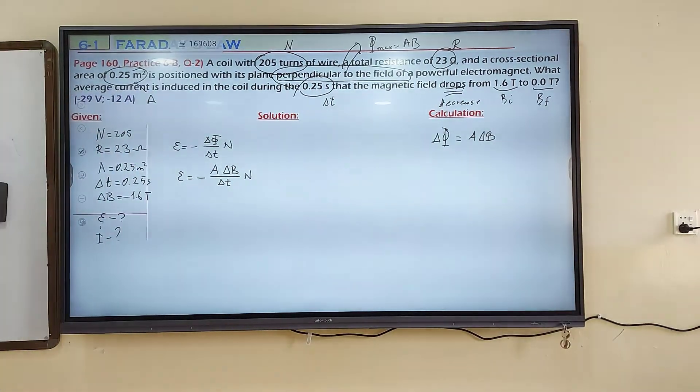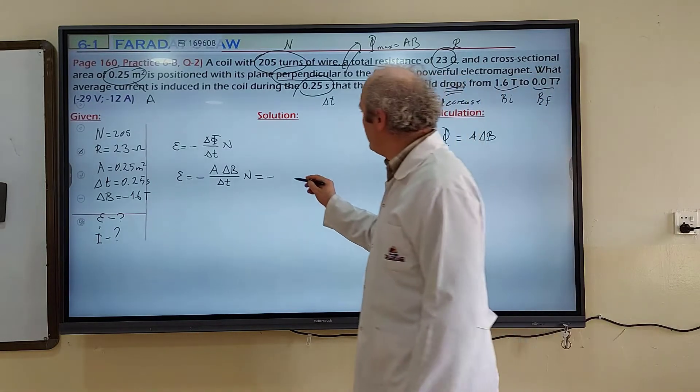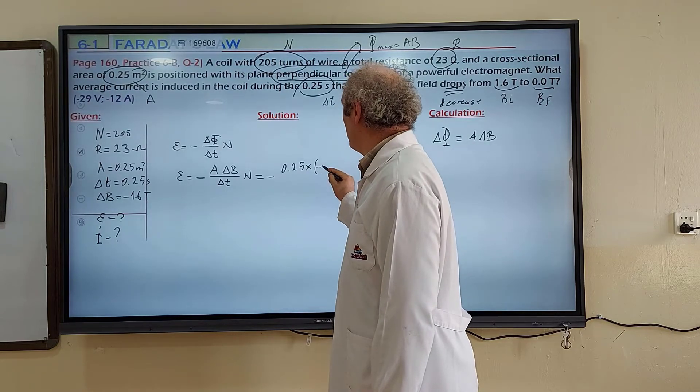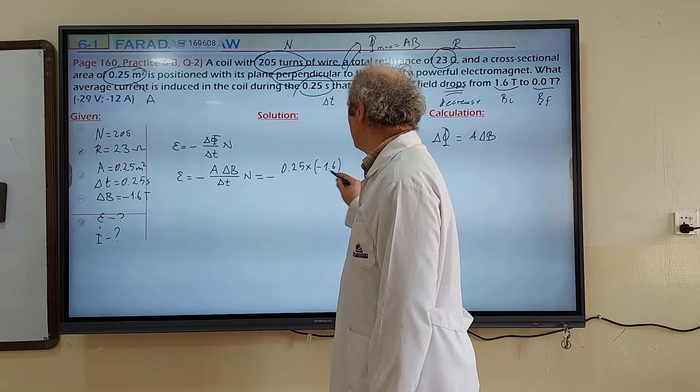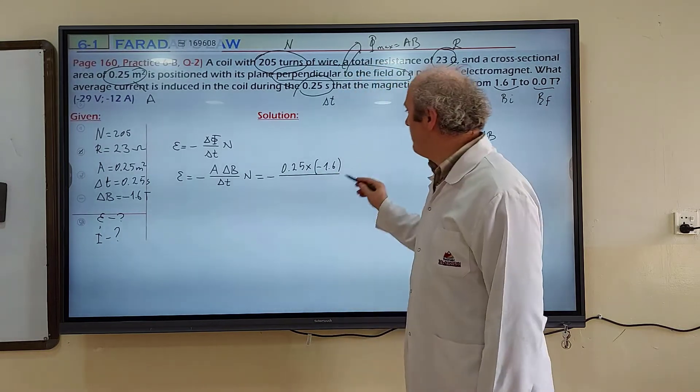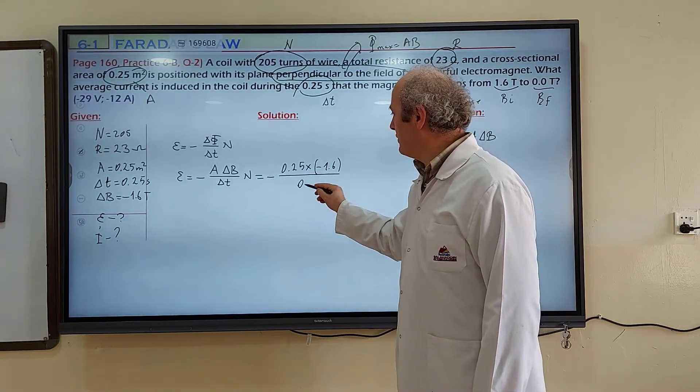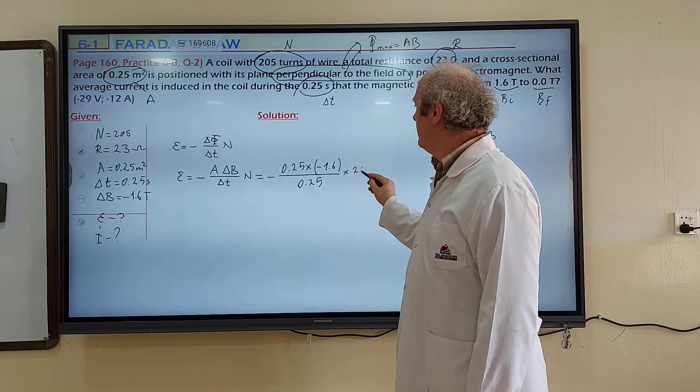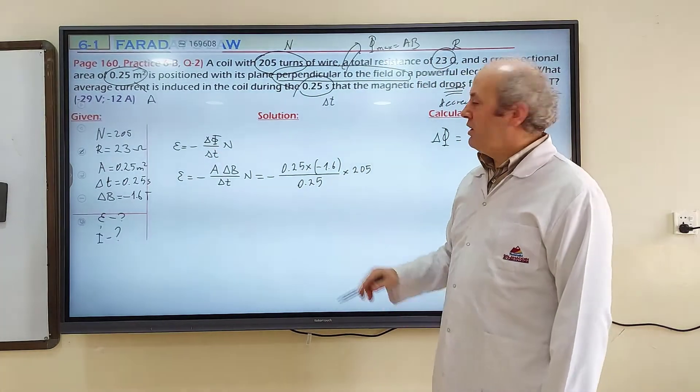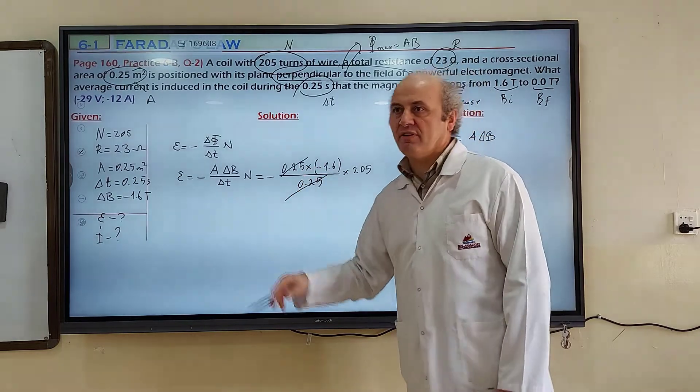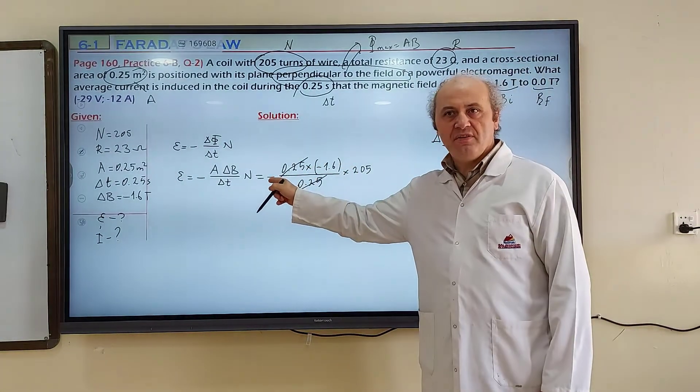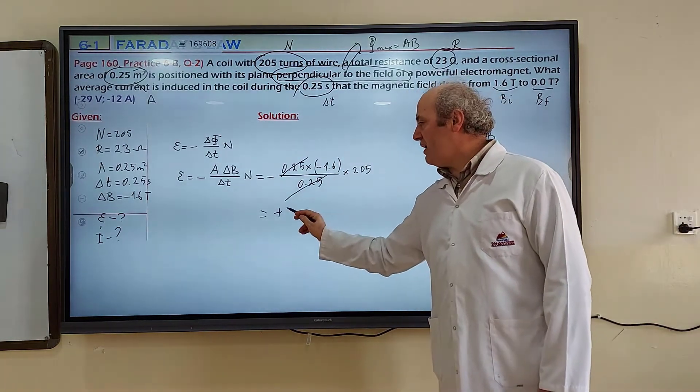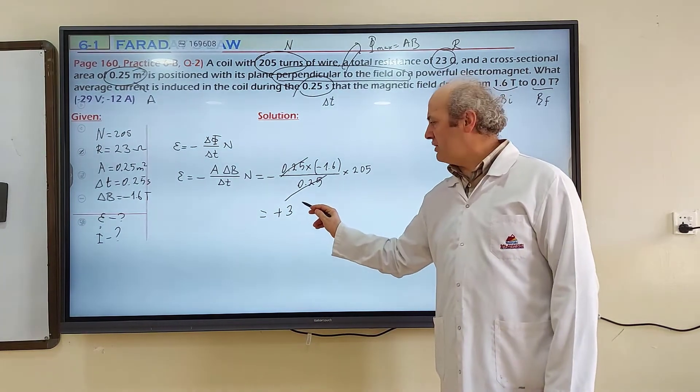Induced EMF is equal to negative A times delta B divided by delta t multiplied by n. Now let me insert the numbers. Area is 0.25. Delta B is negative, don't forget negative, negative 1.6, divided by delta t, 0.25. N is 205. This 0.25 and that 0.25 will simplify. Negative times negative changes to positive. Positive 328 volts.